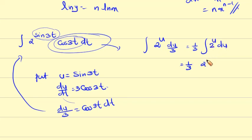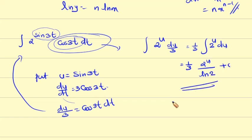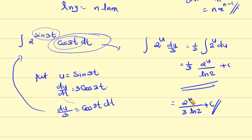The integral of 2 raise to u is 2 raise to u by ln 2 plus c. So the result is 2 raise to u by 3 ln 2 plus c. Substituting back, u means sin 3t, giving the final answer 2 raise to sin 3t by 3 ln 2 plus c.